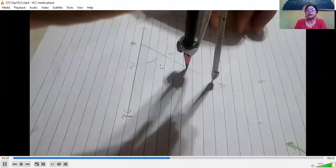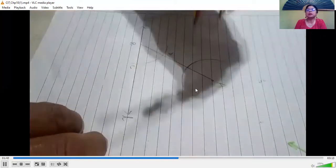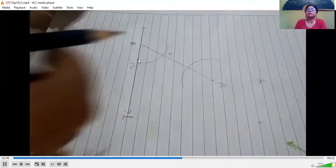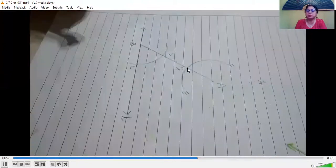Now with that same radius and center A, we draw another arc. Same radius. And the arc is EF which cuts AB at G. This is the point G.